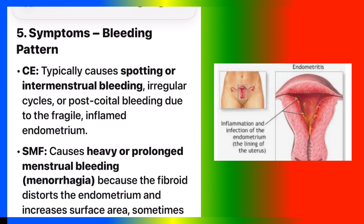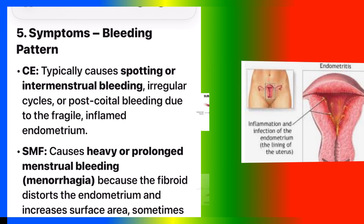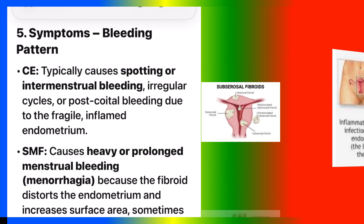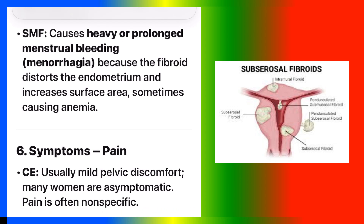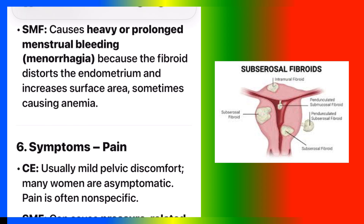Number five: symptoms — bleeding pattern. CE typically causes spotting or intermenstrual bleeding, irregular cycles, or postcoital bleeding due to the fragile, inflamed endometrium. SMF causes heavy or prolonged menstrual bleeding (menorrhagia) because the fibroid distorts the endometrium and increases surface area, sometimes causing anemia.